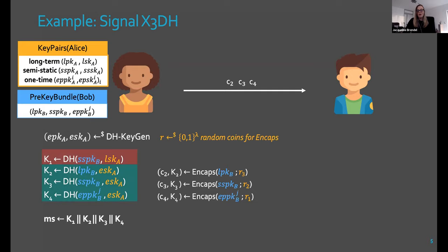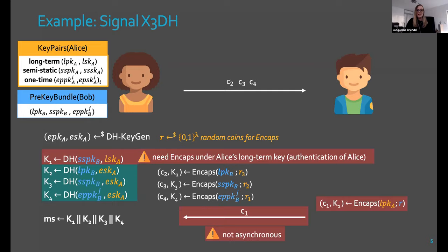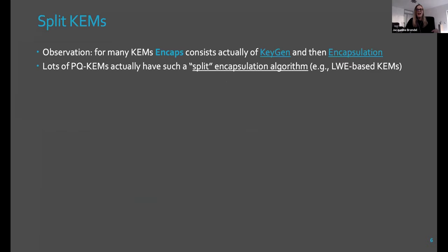Now, if we look at where can we just replace this Diffie-Hellman with an encapsulation operation of a KEM, then for K2 to K4, this works perfectly fine. But for this first K1, we have a problem. This is a Diffie-Hellman which is called static-static, so it involves a static key from Alice's side and a semi-static key from Bob's side. This is needed for implicit authentication. We actually would need an encapsulation under Alice's long-term key, but only Bob could be doing this encapsulation, which would mean that Bob would have to be online and send over a ciphertext to Alice, and we would lose the key feature of this asynchronicity. So this does not work, basically. This is where our split KEM notion came into play, where we, as I already said, observed simply that the encapsulation operation often is a key generation and then the actual encapsulation, and lots of post-quantum KEMs actually achieve such a notion.